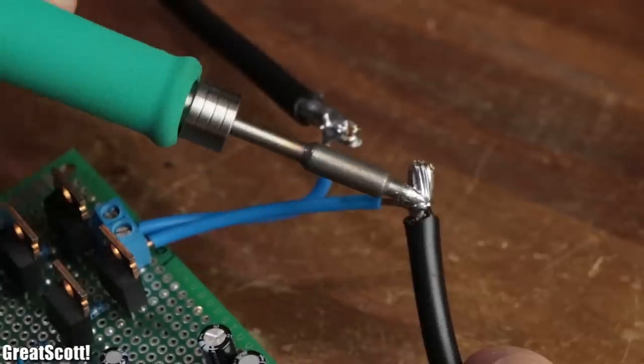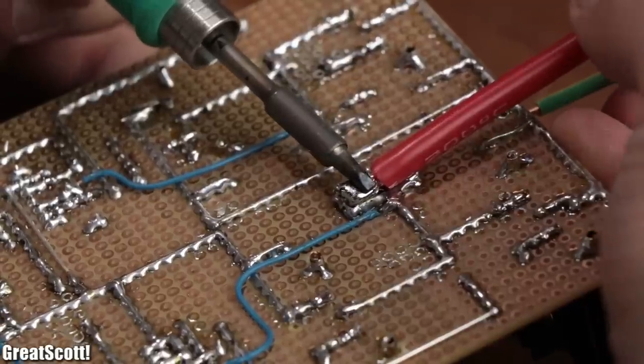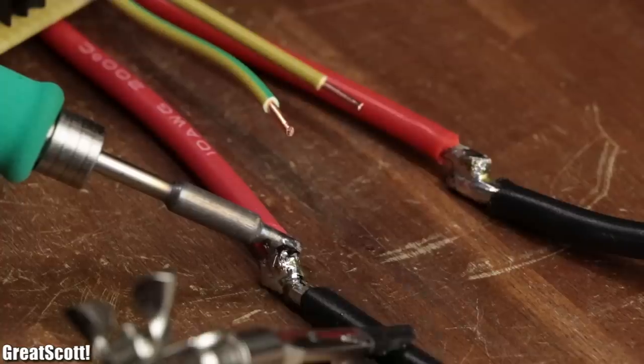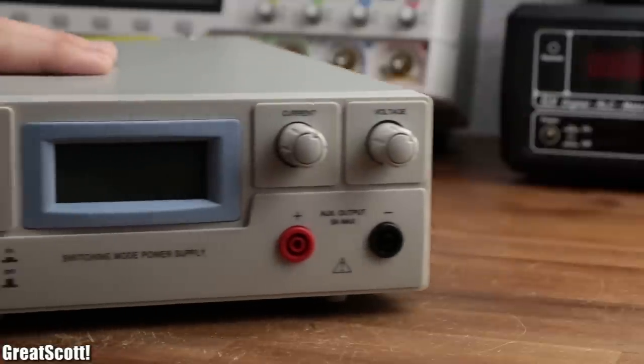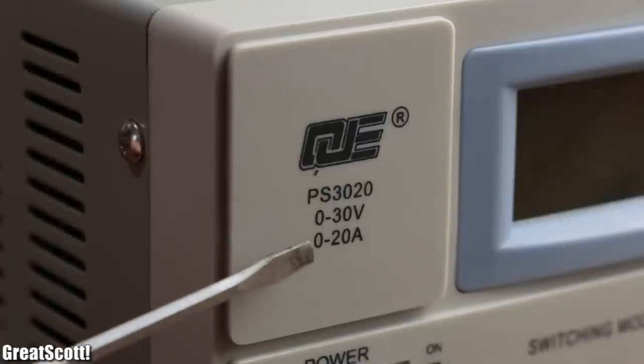So I removed the wires of the primary coil from the old inverter, soldered two 10 AWG wires to the new inverter, and soldered the primary wires to them. As a power source, I used a lab bench power supply with a maximum output voltage of 30 volts and a maximum current output of 20 amps.